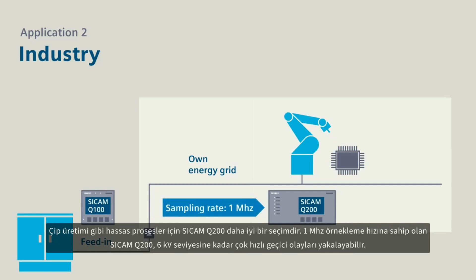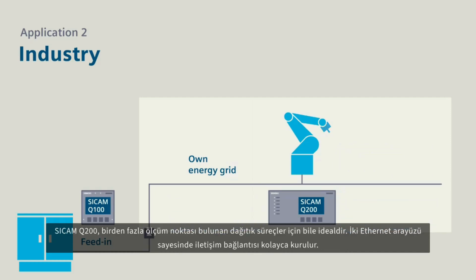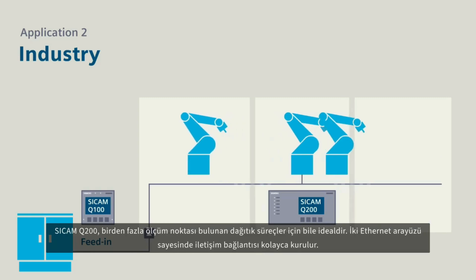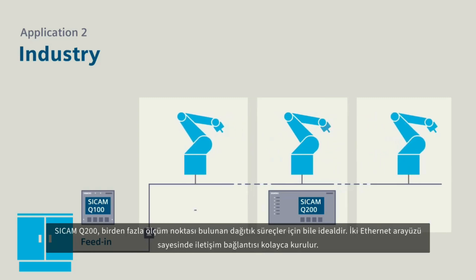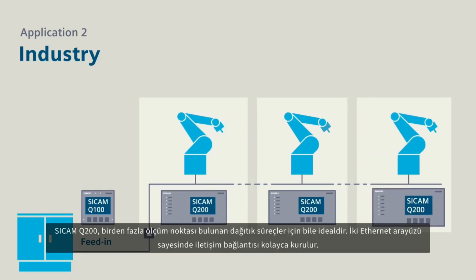For sensitive processes such as chip manufacturing, it is better to use a Secamp Q200 with a sampling rate of 1 megahertz. The Secamp Q200 can also acquire extremely fast transients up to 6 kV, and is optimally suited even for widely distributed processes with multiple measuring points.